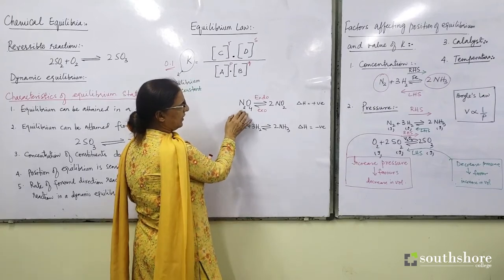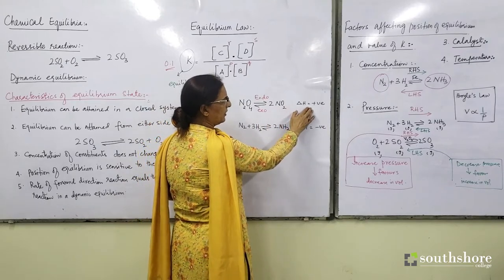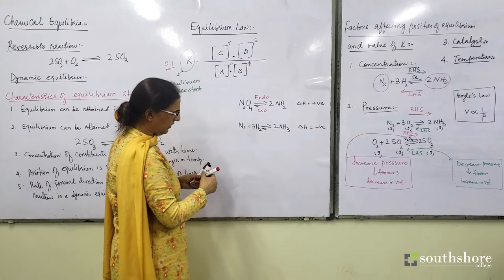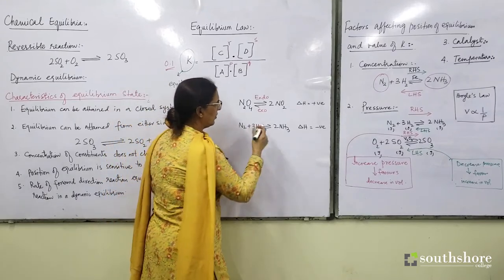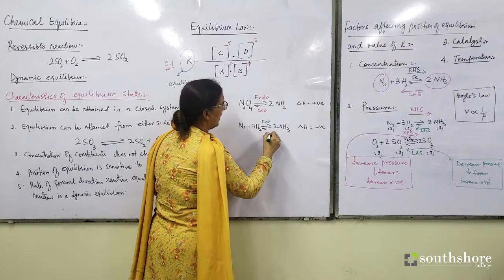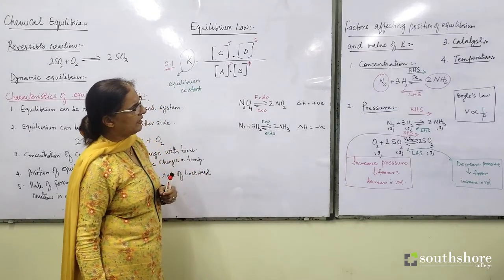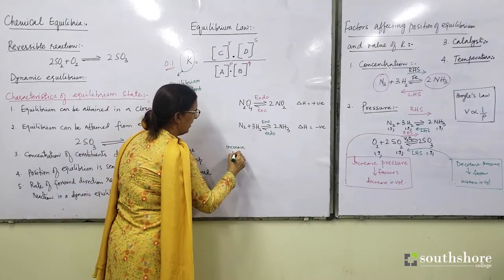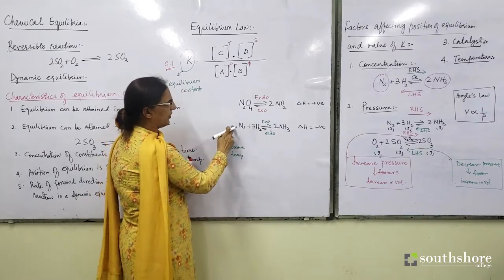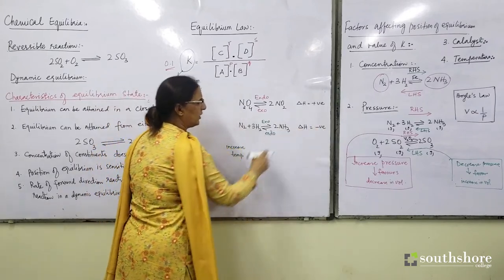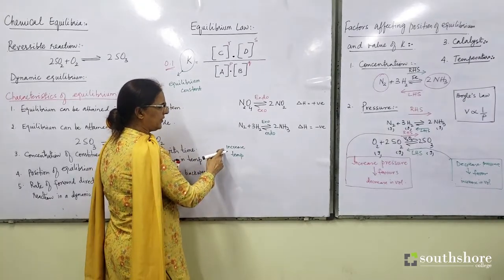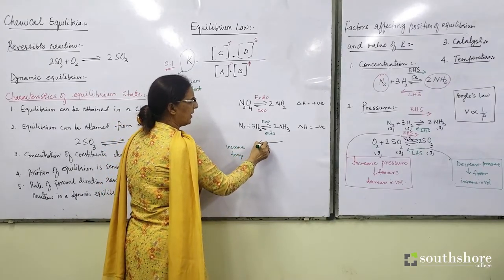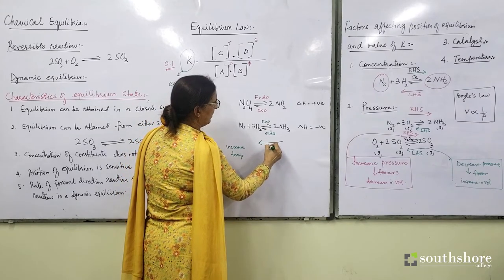When N₂O₄ is changing to nitrogen dioxide, the forward direction reaction is endothermic and the backward direction is exothermic. For Haber's process, it is exothermic in the forward direction and endothermic in the backward direction. Now, if I increase temperature for Haber's process — it is an exothermic reaction in the forward direction — increase in temperature for an exothermic reaction would always favour the backward direction. It will shift position of equilibrium towards the left-hand side.